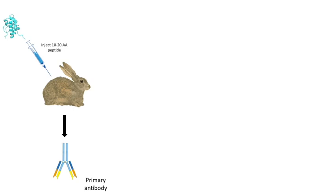So how do we obtain our antibodies against our protein of interest? We take a small part of our protein, usually around 10 to 20 amino acids long, and we inject this into an animal, in this case a rabbit. The immune system of the rabbit will recognize this piece of the protein as non-self and will automatically start to produce antibodies against it. We can then isolate the antibodies from the blood serum of the rabbit, and we have our primary antibody.